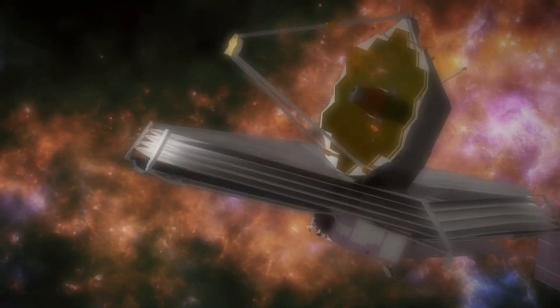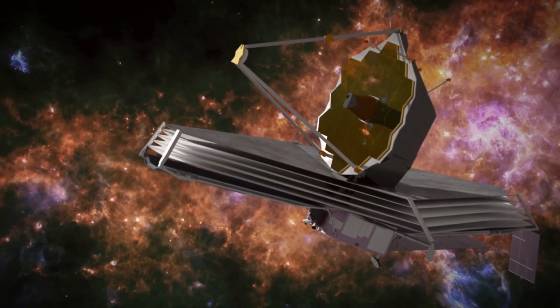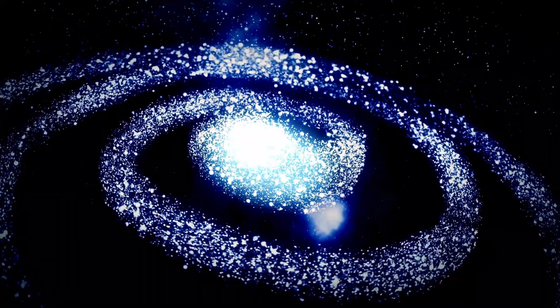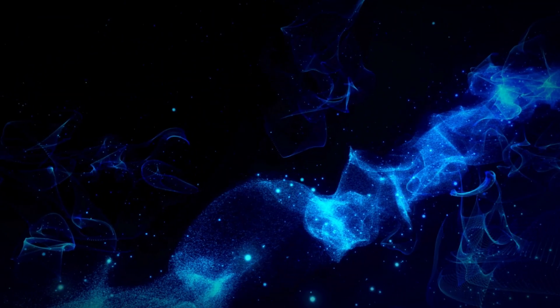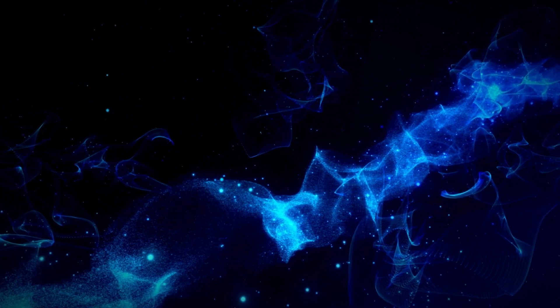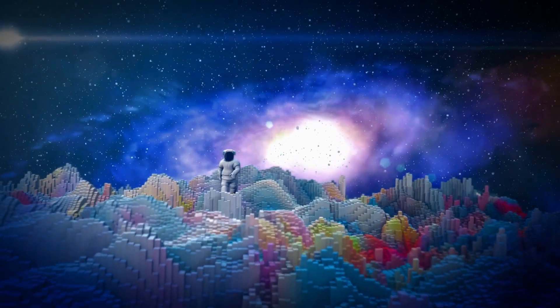The James Webb Space Telescope has recently achieved an astronomical milestone by capturing the most detailed image of Proxima b, an exoplanet located in our galactic backyard. This breakthrough has illuminated incredible features of this world, suggesting its potential to support life.